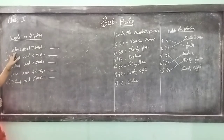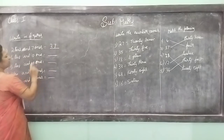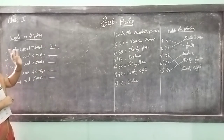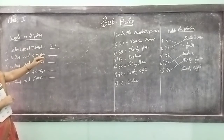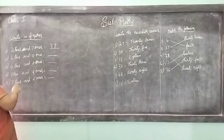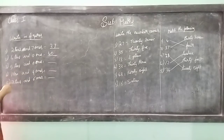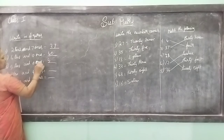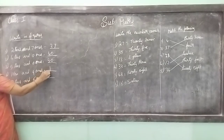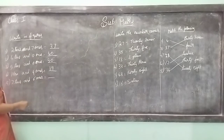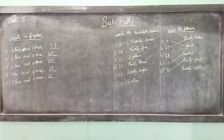How many tens and how many ones? 2 tens and 7 ones is 27. You know that 2 tens is equal to 20, and 7 ones is 7, so 27. 4 tens and 0 ones is 40. 5 tens and 0 ones is 50. 1 ten and 9 ones is 19. 2 tens and 6 ones is 26.